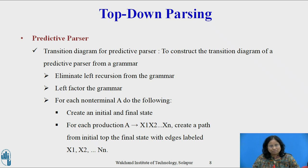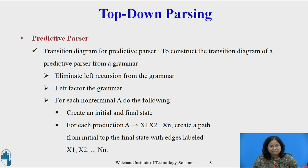Transition diagram for the predictive parser: In the parser, there is one diagram for each non-terminal. The labels of edges are tokens and non-terminals. A transition on a token means we should take that transition if that token is the next input symbol. A transition on non-terminal A is a call of the procedure for A. To construct a transition diagram of a predictive parser from a grammar, first eliminate left recursion from the grammar and then left factor the grammar. Then, for each non-terminal A, create an initial and final state, and for each production A derives x1, x2, up to xn, create a path from the initial to the final state with edges labeled x1, x2, up to xn.